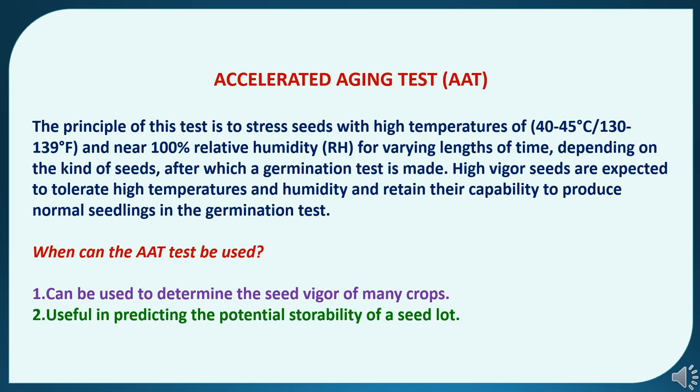Now, accelerated aging test. The principle of this test is to stress seeds with high temperatures of 40 to 45 degrees centigrade (130 to 139 degrees Fahrenheit) and near 100 percent relative humidity for varying lengths of time, depending on the kind of seeds, after which a germination test is made. High vigor seeds are expected to tolerate high temperatures and humidity and retain their capability to produce normal seedlings. This test can be used to determine the seed vigor of many crops and is useful in predicting the potential durability of a seed lot.